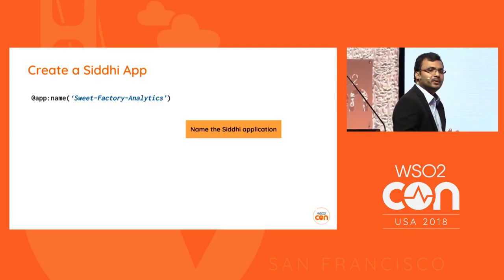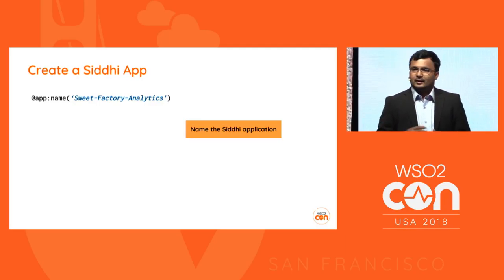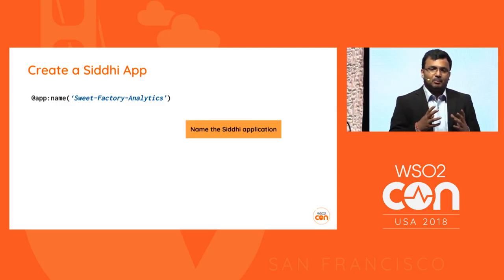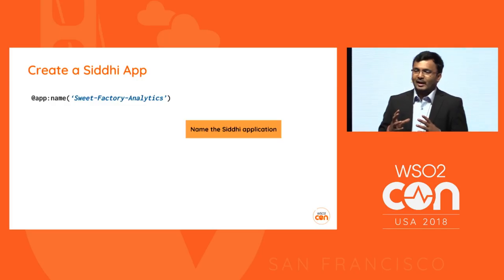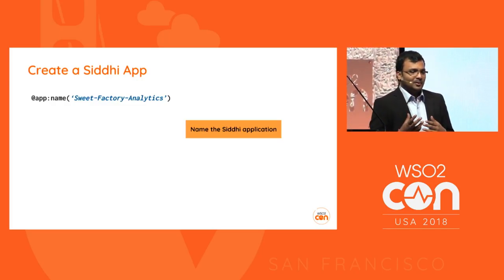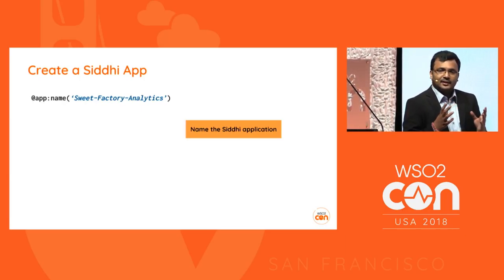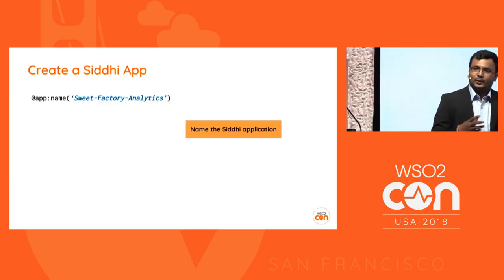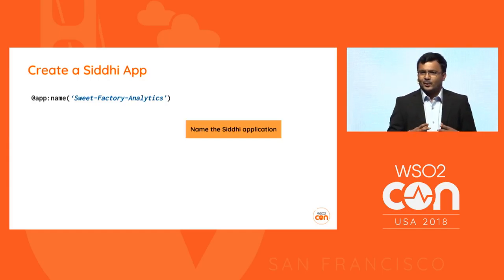In WSO2 Stream Processor, streaming applications are self-contained. You have one single Siddhi app, and that Siddhi app contains everything in a self-contained manner: you write queries, define where to receive events, how to process those events, and what to do with them after processing. You can write the entire end-to-end flow in a single Siddhi app.